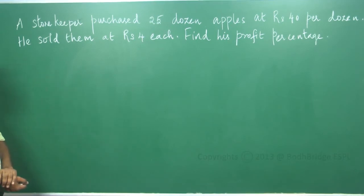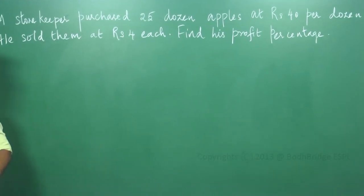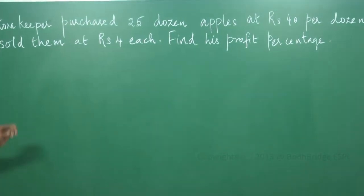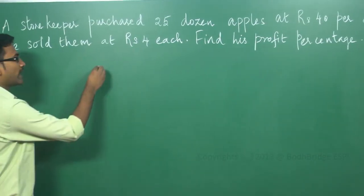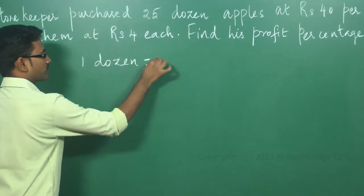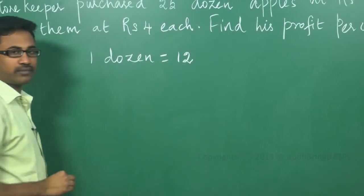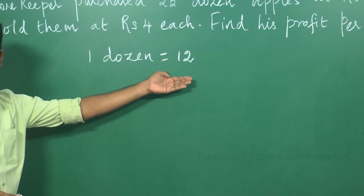Initially, what the shopkeeper is doing is purchasing 25 dozen apples at Rs. 40 per dozen, and then he sold them at Rs. 4 each. You need to know that 1 dozen is equal to 12. This is a very simple thing. 1 dozen is equal to 12 items.